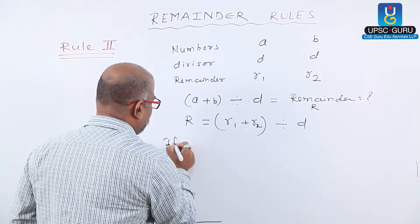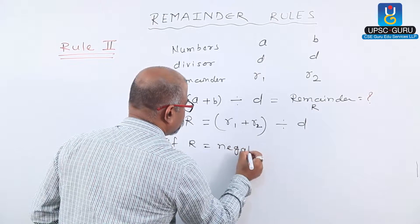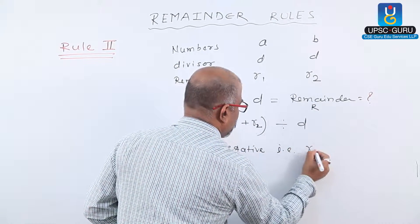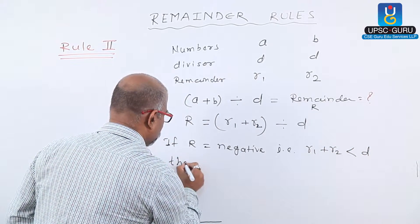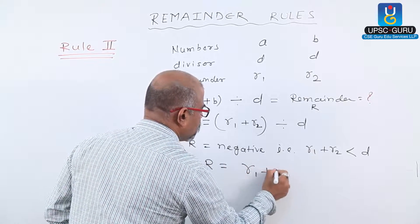In this case, if R is negative, that is R1 plus R2 less than D, then R equals R1 plus R2.